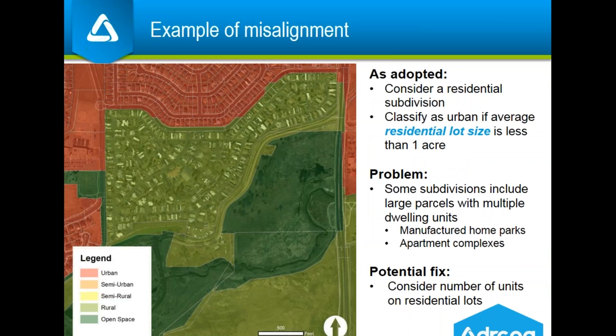Here's one example: the board language asks the model to look at residential lot size to determine density. But there are many cases where a large parcel contains multiple dwelling units — the case shown here is a manufactured home park, but this also applies to many apartment complexes. Ten years ago when this system was set up, we really didn't have as robust a dataset about housing unit counts as we do today. So the potential fix would be to factor those unit counts in.